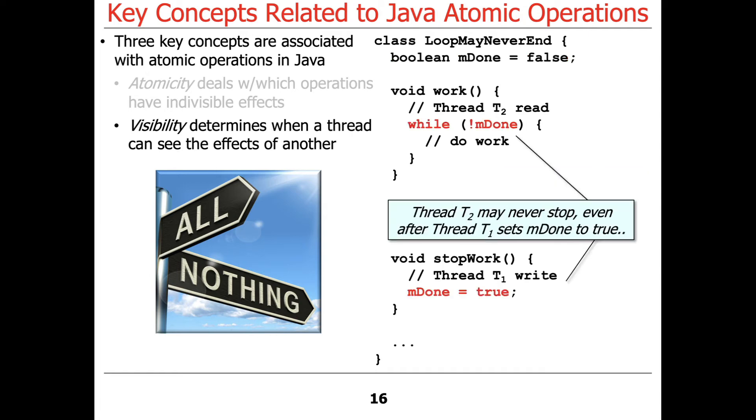And then we have these two threads, T1 and T2. And T1 is checking to see, or T1 is setting mdone to true. T2 is checking to see if mdone is still false. So while it's still false, we spin. And even after T1 sets mdone to true,